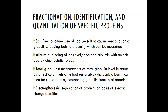To identify which proteins are present, several methods can be used. Salt fractionation uses a sodium salt to precipitate globulins, leaving behind albumin, which can then be measured. Albumin is usually measured by the binding of positively charged albumin with an anionic dye — a dye-binding method. Total globulins can be measured colorimetrically using glyoxylic acid. Albumin can then be calculated by subtracting globulin from total protein, though typically we measure total protein and albumin separately and calculate globulins as the difference.